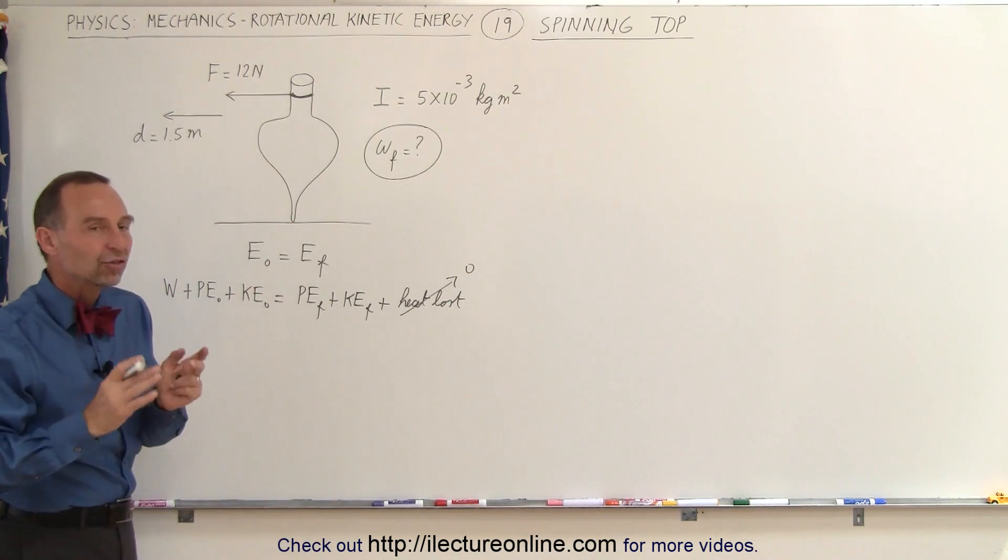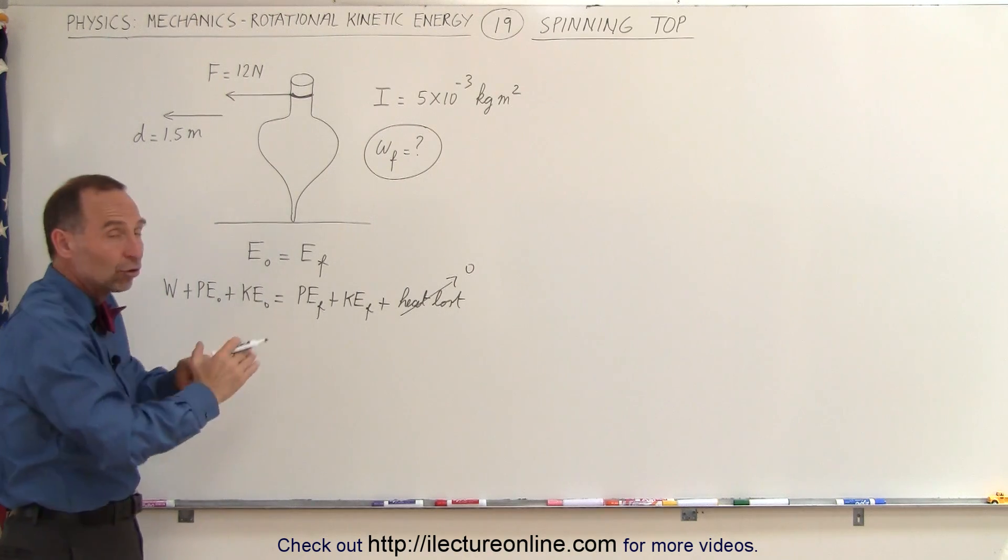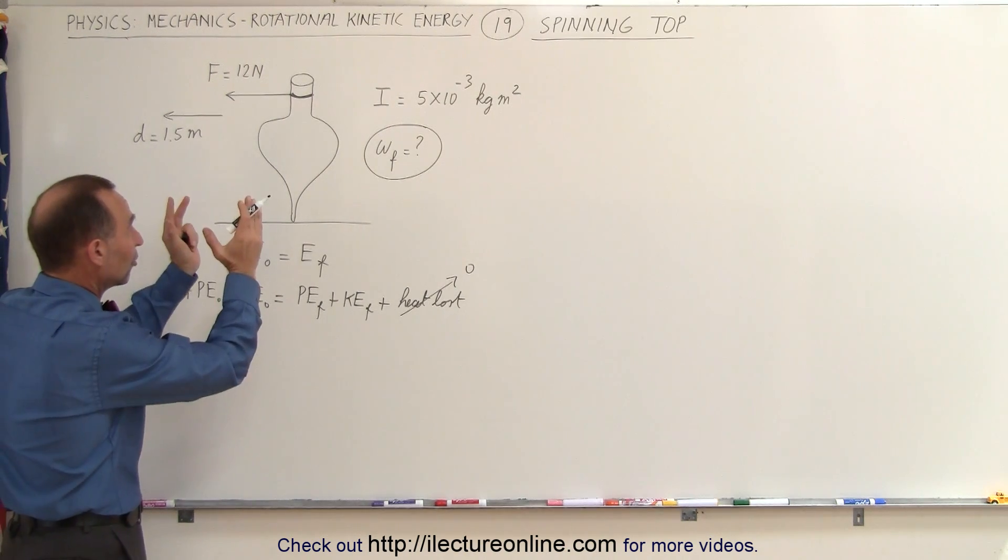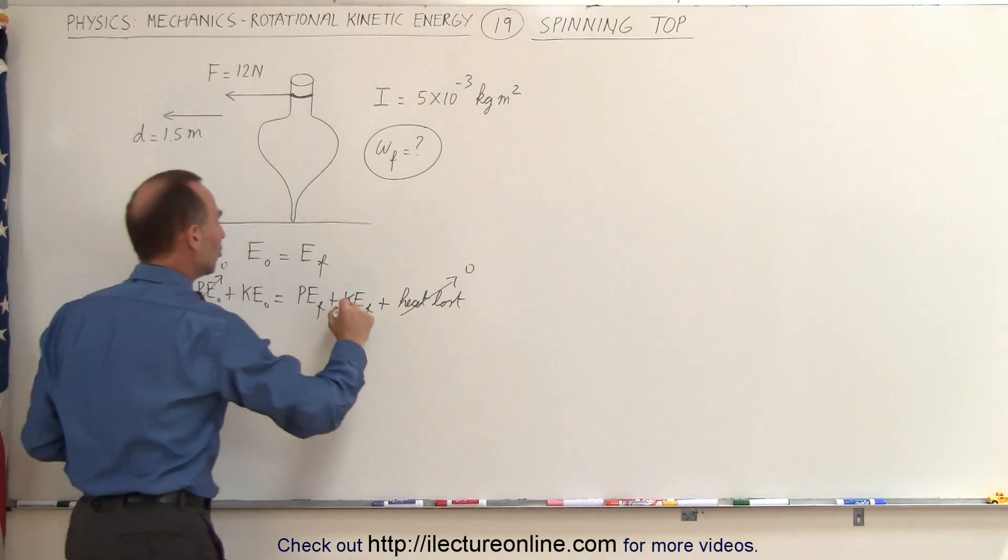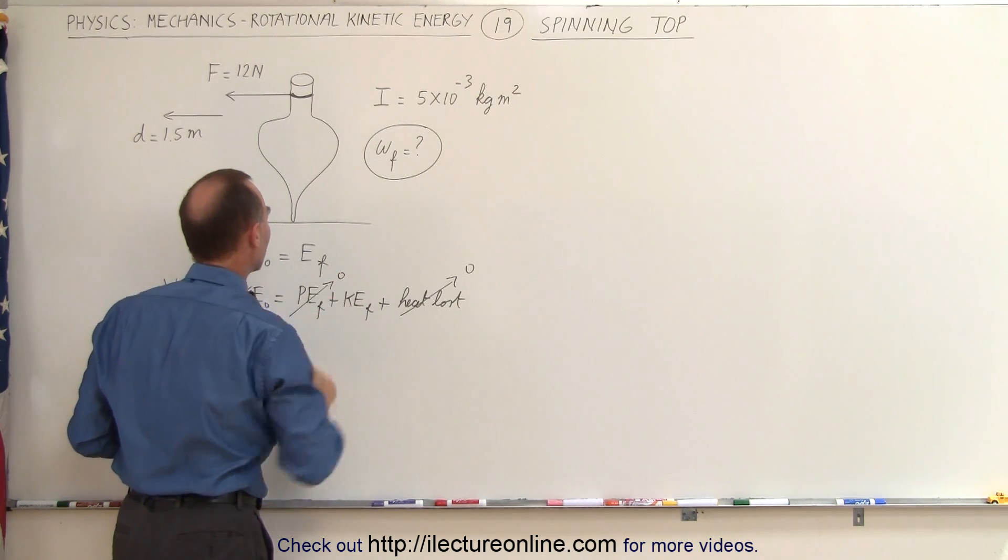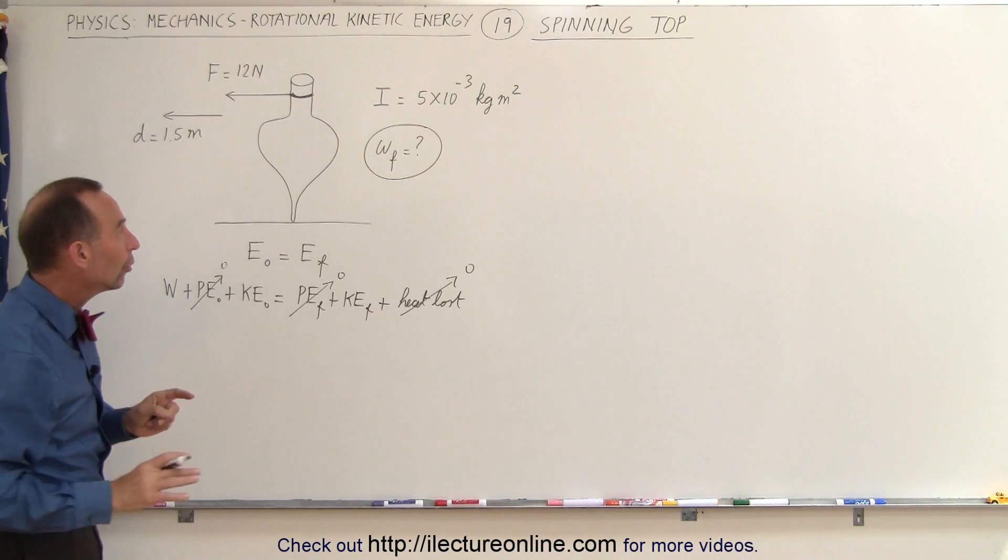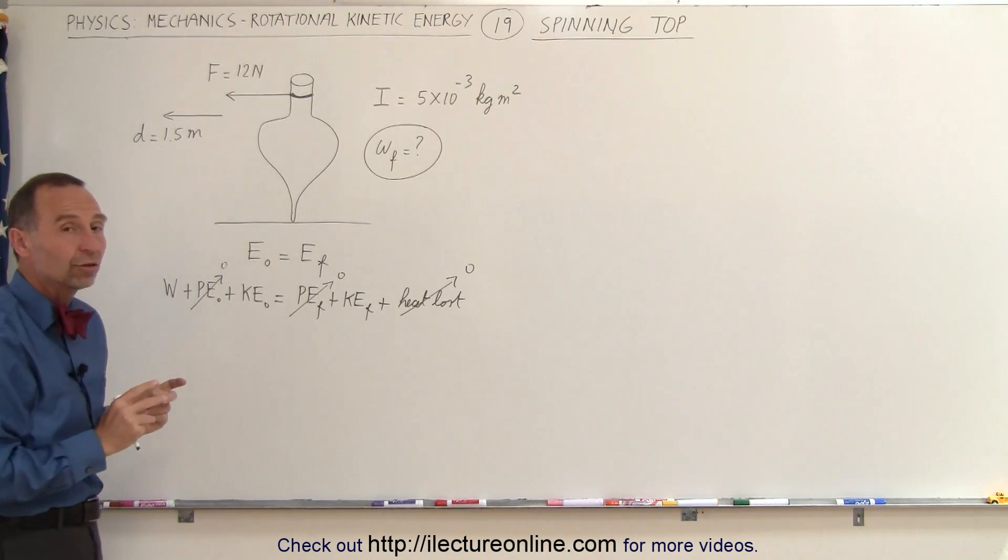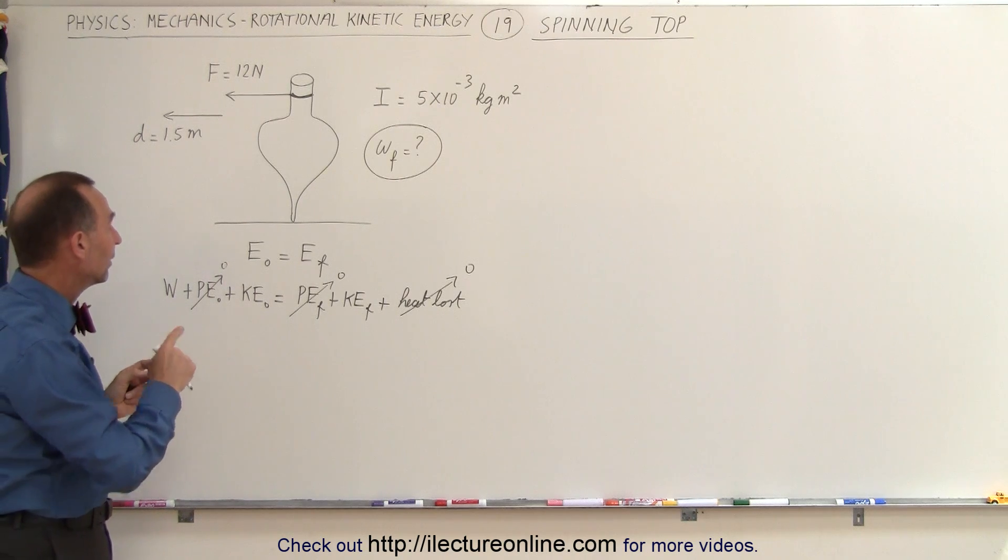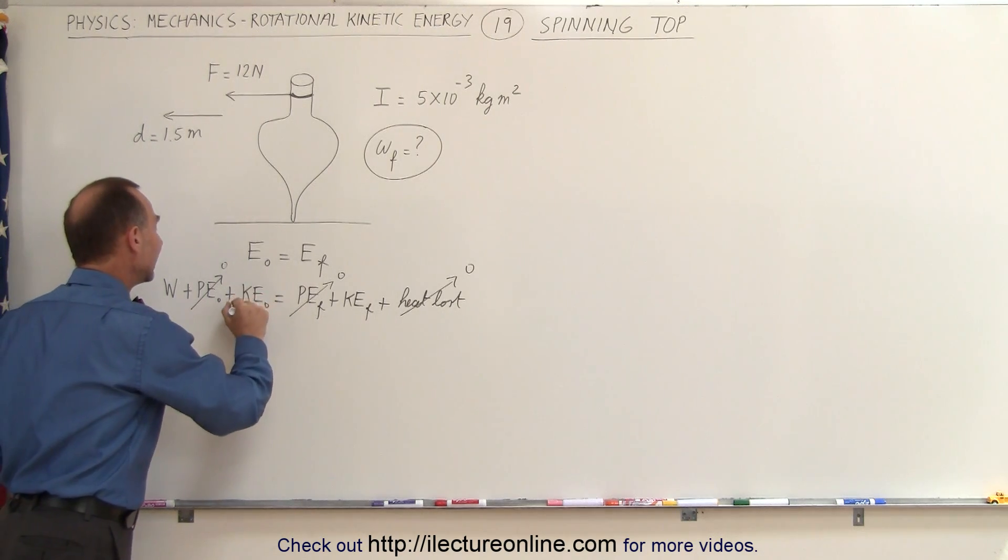Notice that there's no potential energy in the beginning nor the end. There's no height gain. The top starts in this position, ends in this position. So there's no potential energy initially and no potential energy final. Also notice that initially when you start pulling on the top, the top will have no rotational speed and therefore there'll be no kinetic energy initial.